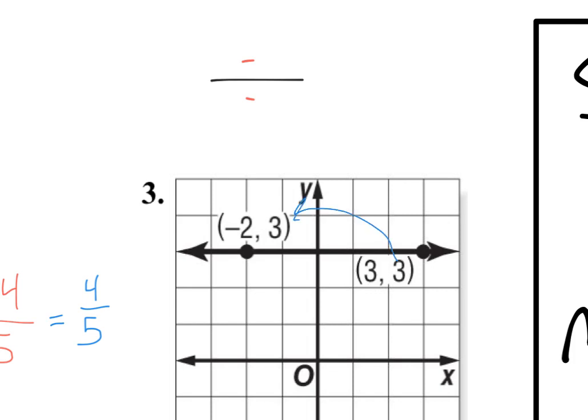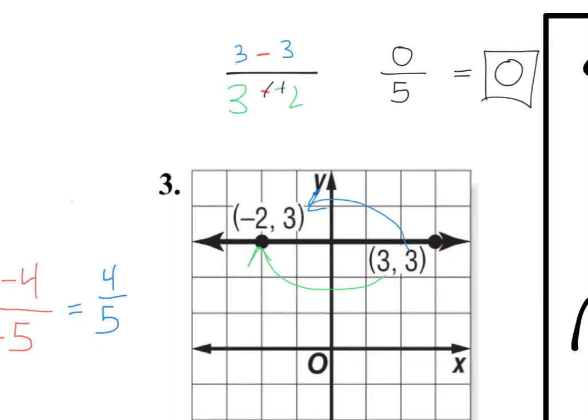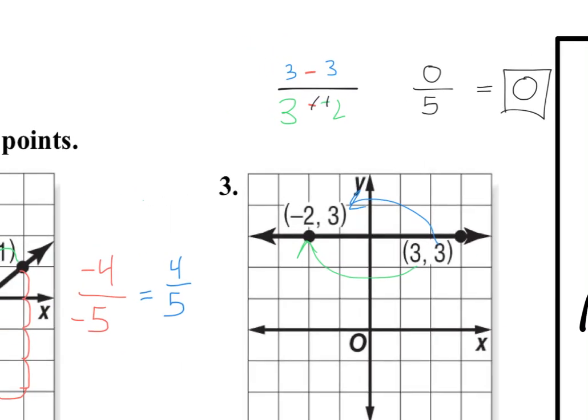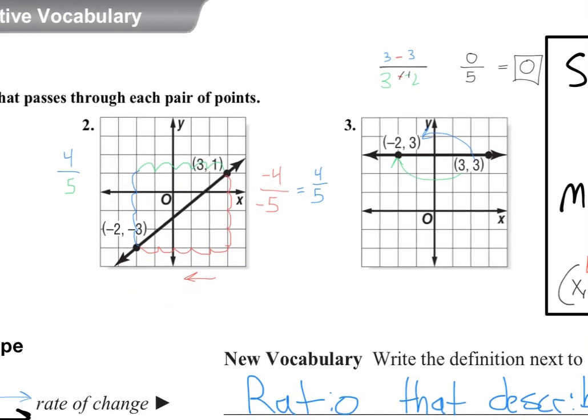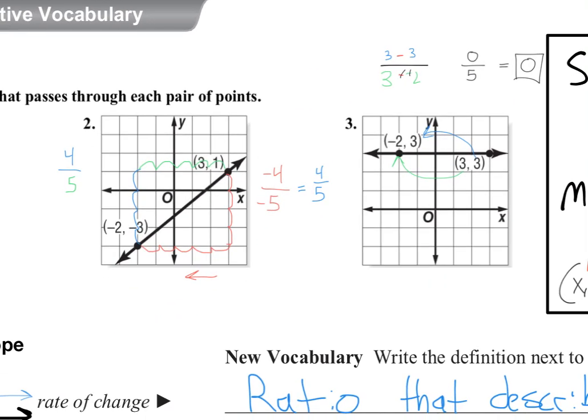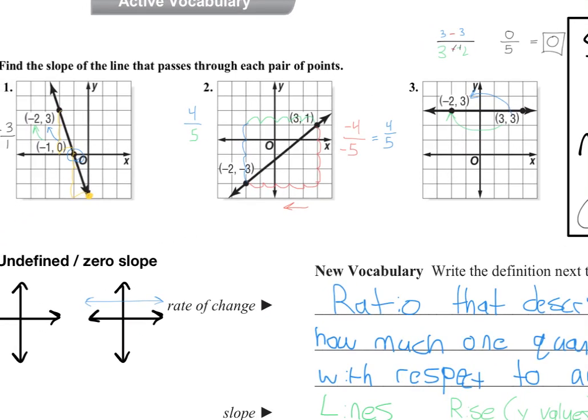And we can check out over here how this makes sense with the formula. So if I do 3 minus 3 over top of 3 minus a negative 2, I end up getting a zero over top of a 5. Now zero divided by anything is zero. That is a slope of zero. And that's what will happen anytime you have a horizontal line. Your y coordinates will be the same because you didn't go up or down, and it will turn into a slope of zero.